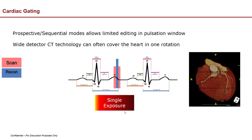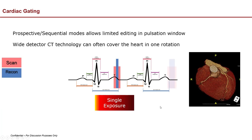There's limited editing here because whatever image you take, you're stuck with it. If the heart is a different size and shape due to a different heartbeat — whether faster or shorter — you're kind of stuck to that 4-centimeter gap or whatever the detector width is. That goes away when you have a wide detector system, because there are no gaps and you can image the heart in one rotation.